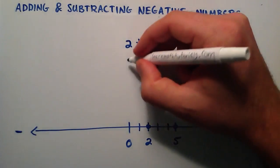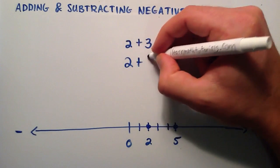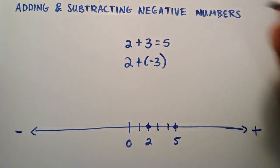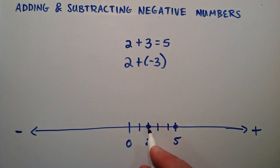So what if we had 2, and we were adding a negative 3? Well, we start at our 2, and instead of adding to the right, since we are adding a negative number, we're going to add to the left. So starting at our 2,